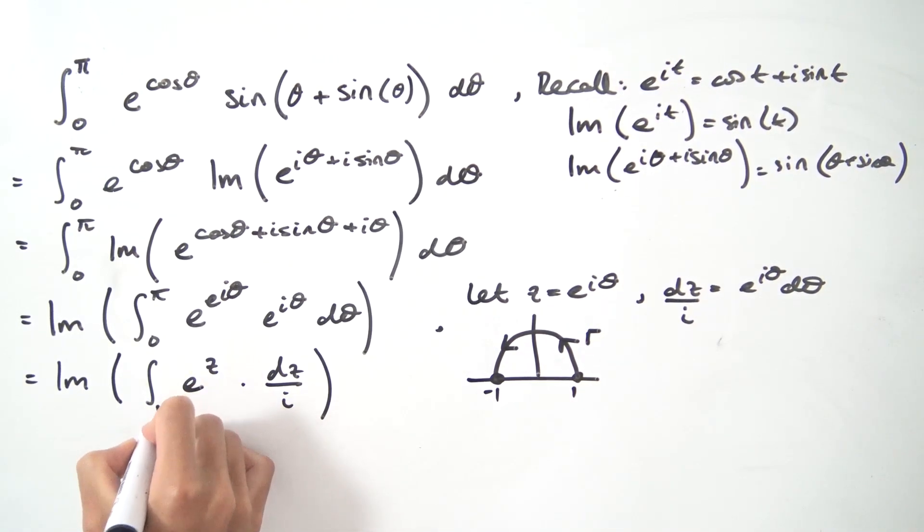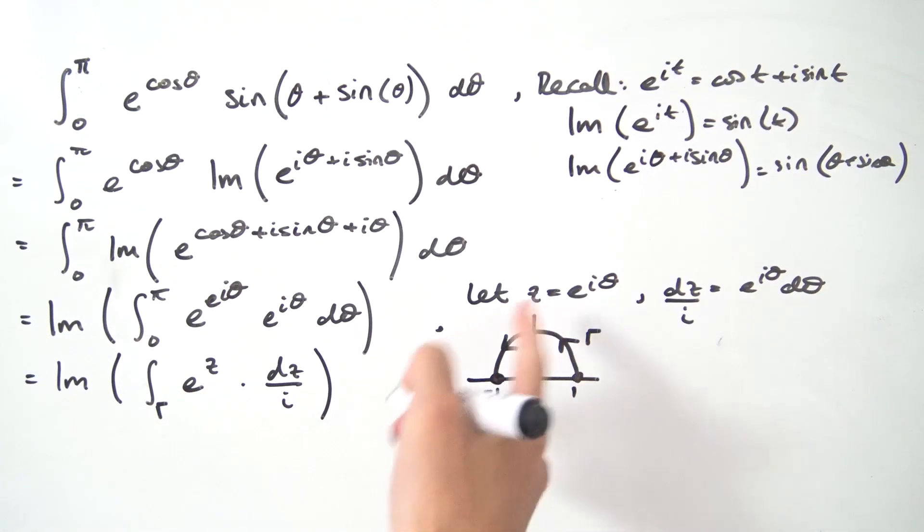We start at 1, end up at minus 1, and I'm going to call that contour gamma. So this is the integral over gamma, not quite a contour integral because we're not doing a closed loop, but it's just some path integral.